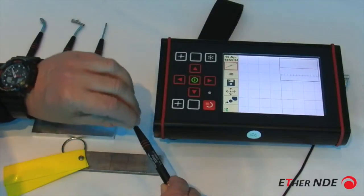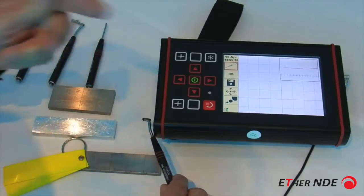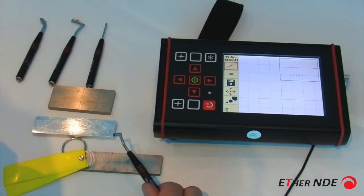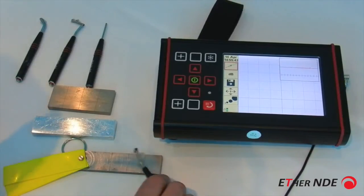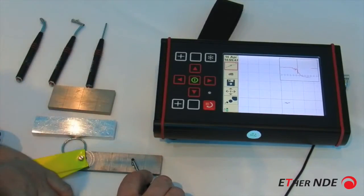We've got a 200kHz pencil probe connected to the instrument. I've recalled the 200kHz settings that come as default with the instrument and I'm here on a bit of steel block. I've just taken the default settings and currently the lift-off signal